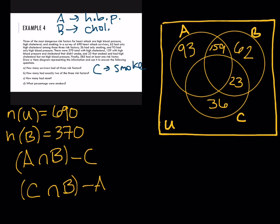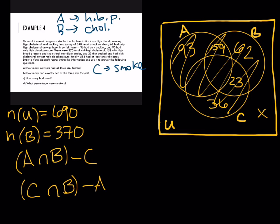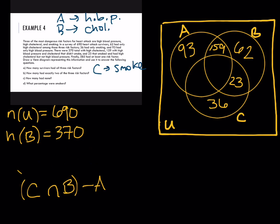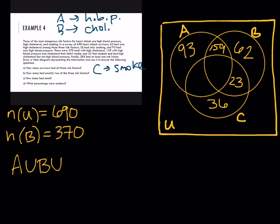Finally, 585 had at least one risk factor. That means it could be 1, 2, or 3 — so that's basically anything inside the three circles. The only people without at least one risk factor are in region 8, outside all circles. In set notation, that's A union B union C, and that cardinality is 585.